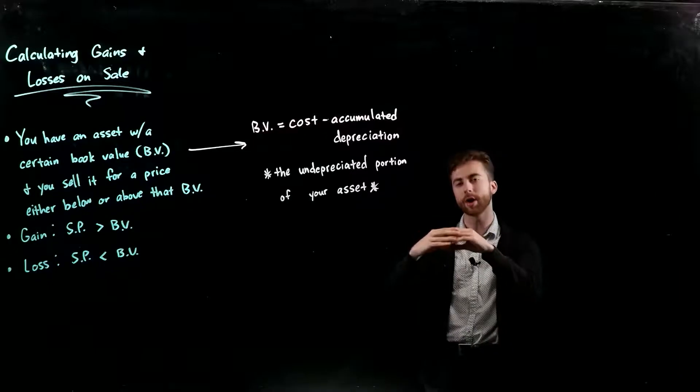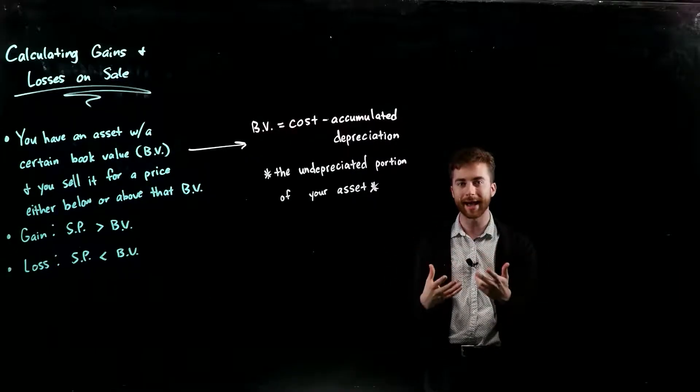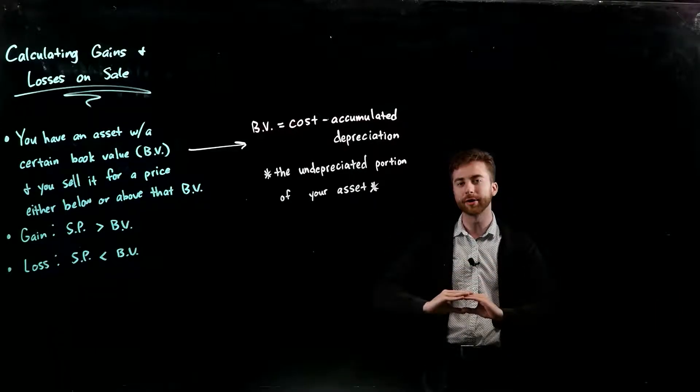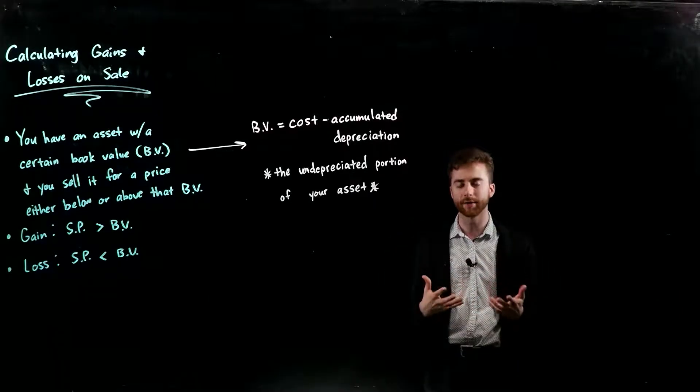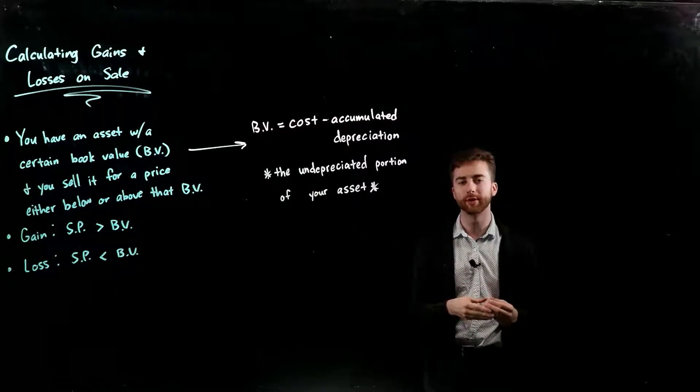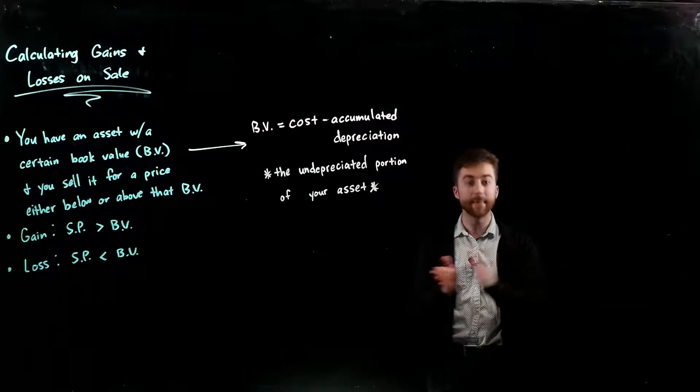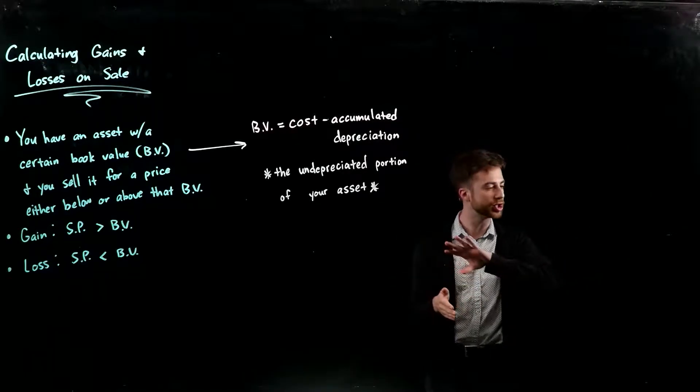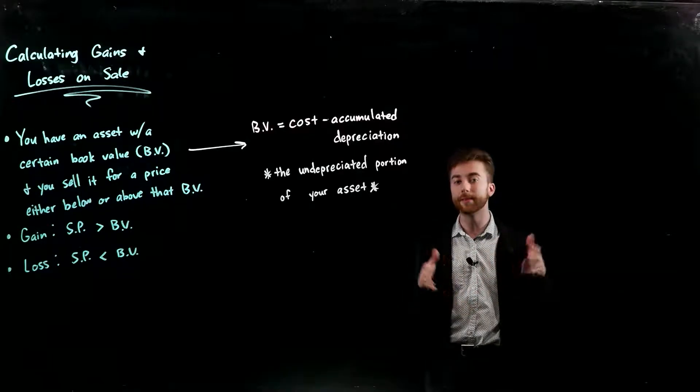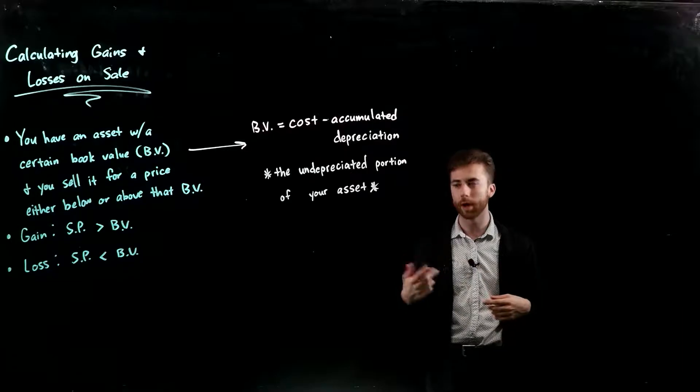You have the cost of your asset and the amount that you've depreciated from that asset. When you subtract those two, that gives you your book value or the undepreciated portion of your asset. Basically you have an asset with a certain book value based on how far along it's been depreciated, and then you sell it mid period. So instead of depreciating it entirely, you sell it in the middle of its useful life for some price that's either above or below that book value.